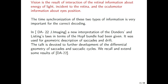In summary, vision is the result of the interaction of retinal information about the energy of light incident on the retina, and oculomotor information about eye position. I will speak about the oculomotor description of this system, which describes the position of the eye, mostly during saccade. I will not speak about drift, but it is very important, and in my previous paper from 2002 I considered the saccade and gave some conjecture about which statistical information is described during drift.